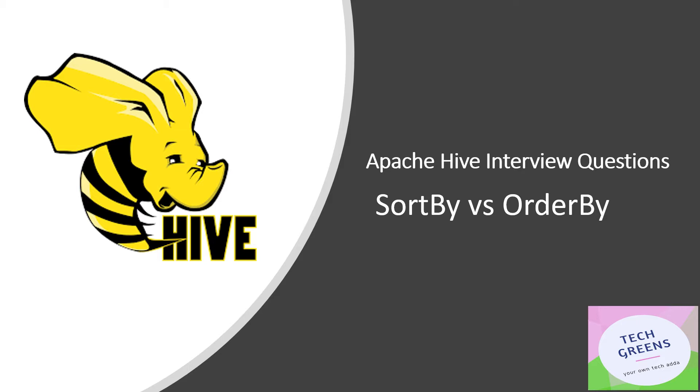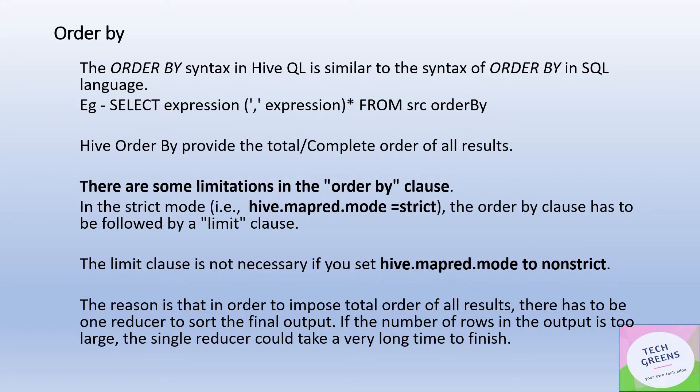Let's see what ORDER BY is. The ORDER BY syntax is similar to what we have in SQL — we can write a query like: SELECT * FROM source ORDER BY column_name. In the Apache Hive world, ORDER BY provides complete or absolute ordering of all the results in the data set. The ordering provided by ORDER BY is lexicographic, meaning the ordering is done based on the assumption that everything is a string.